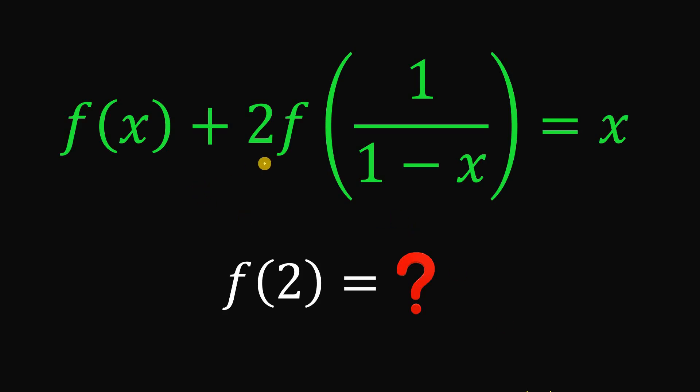If f of x plus 2 times f of 1 over 1 minus x equals x, then our goal in this question is to find the numerical value of f of 2.